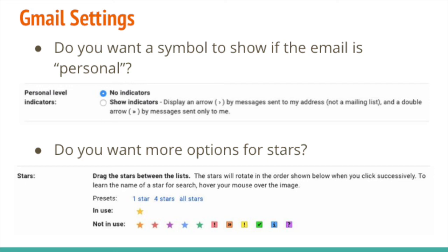You can also create more options for stars. If you start using starred messages and wish there were more different kinds, there are. In your settings you can add different types of stars, and instead of being an on/off toggle, clicking will cycle through them — click once for a yellow star, twice for orange, three times for red, then back to clear. So if you get into using stars, just know there are more options available.